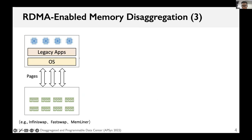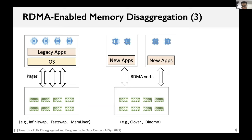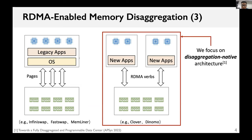There are two ways to run applications on disaggregated memory. The first is leveraging the operating system's page swapping to use disaggregated memory, so it supports legacy applications. The second is bypassing the operating system and building new applications on disaggregated memory from scratch. In this work, we focus on the second way, which is also called the disaggregated-native architecture.